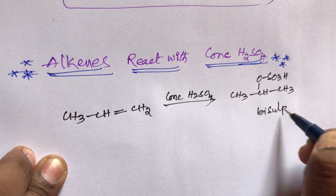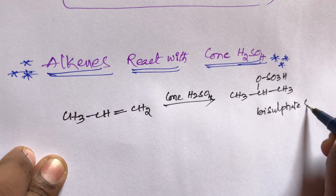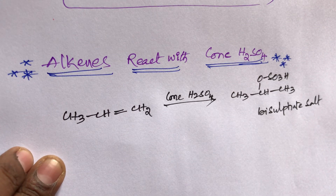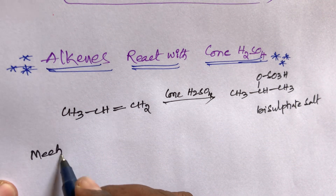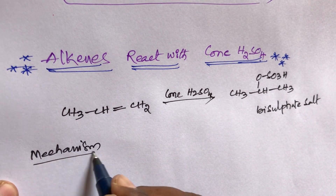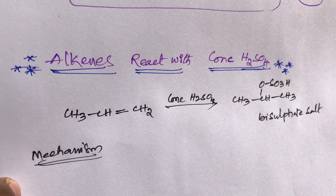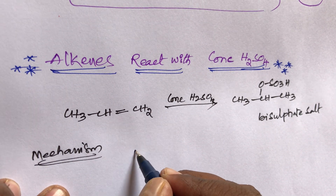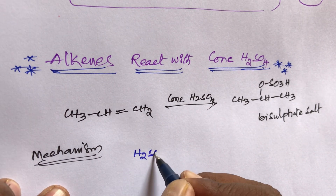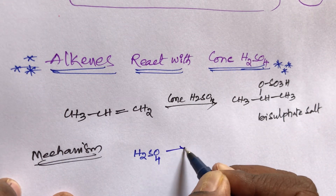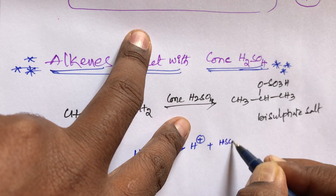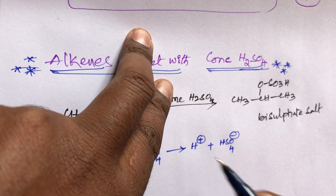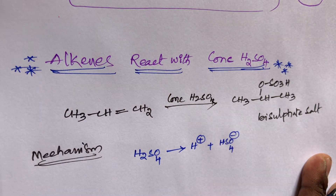Now I will write the mechanism clearly. Concentrated H₂SO₄ on ionization gives H⁺ and HSO₄⁻. The H⁺ is called the electrophile and HSO₄⁻ is called the nucleophile.